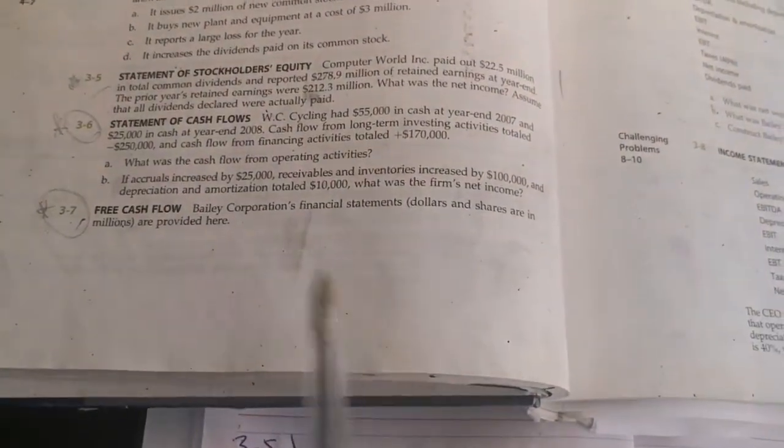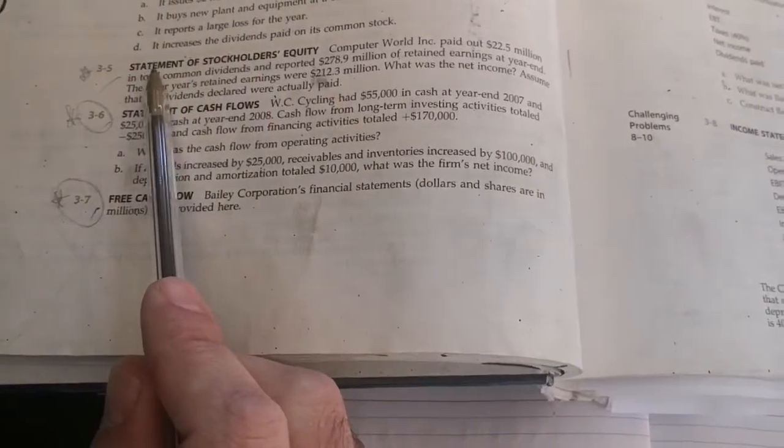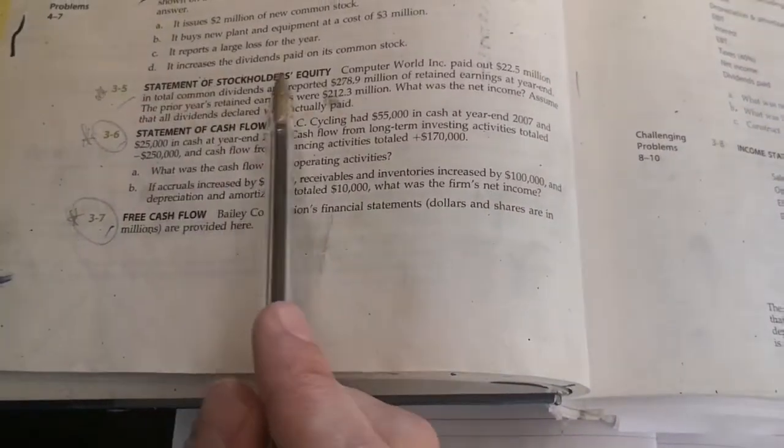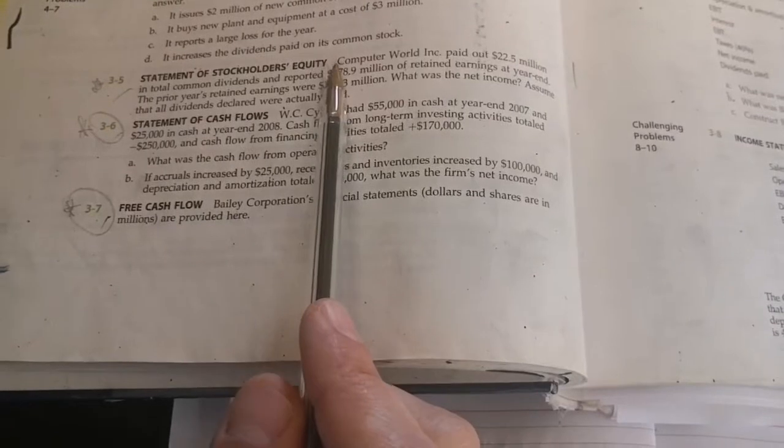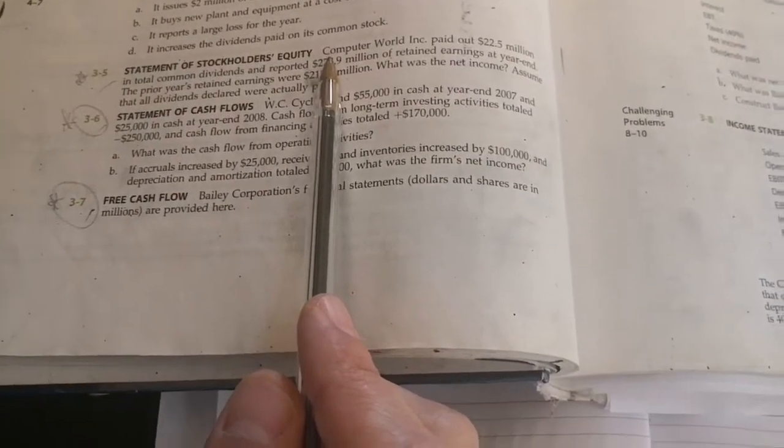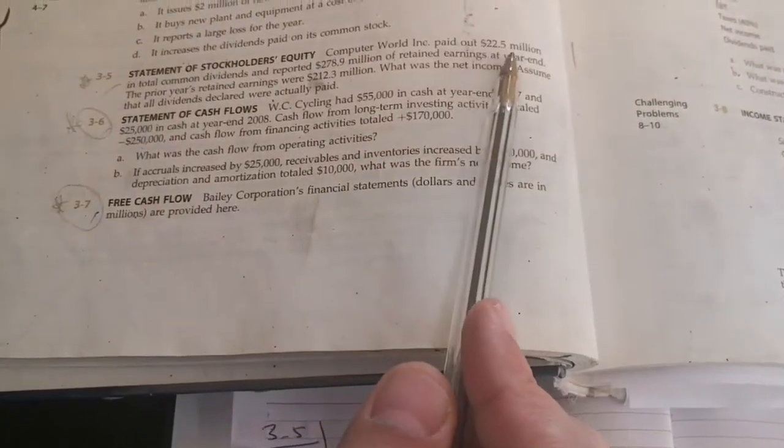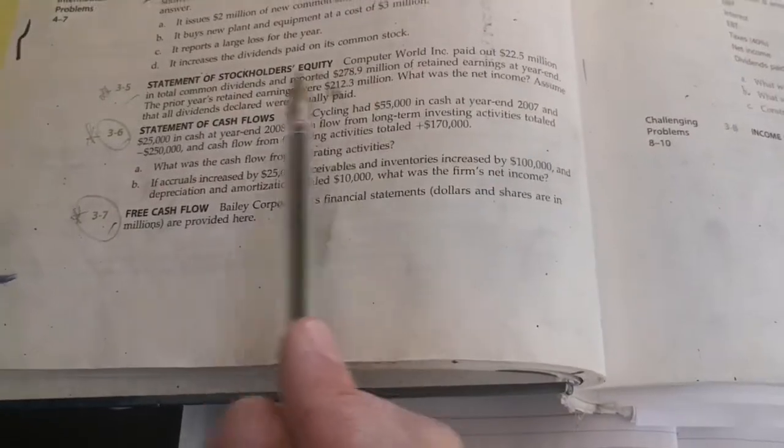Good morning, we'll solve problem 35, page 76. It's about the statement of stockholders' equity. First we read the problem, then write the given, then we'll solve it. Computer World Incorporated paid out $22.5 million in total common dividends.